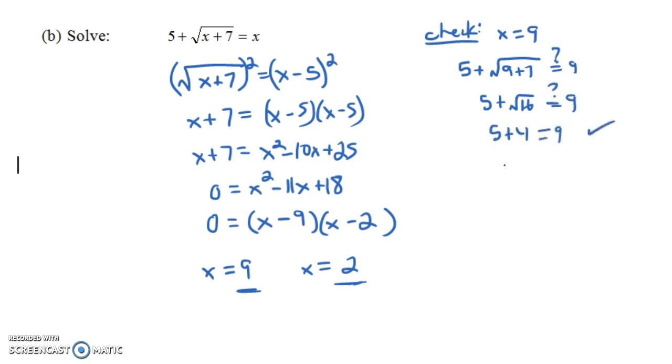When we plug in 9, we get a true statement. Now let's plug in the other solution here, 2, to check and see is it really a solution. When we plug it in, we get 5 plus the square root of 2 plus 7 is equal to 2. We're plugging it in for X in the original equation. This says 5 plus the square root of 9 is equal to 2. So this says 5 plus 3 equals 2. So that's correct, right? No, of course it's not correct. 5 plus 3 is not 2, it's 8. So actually what we have here is an extraneous solution.